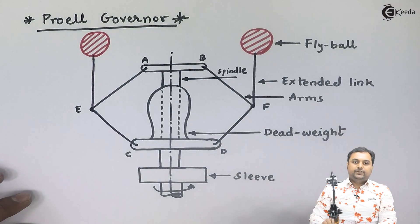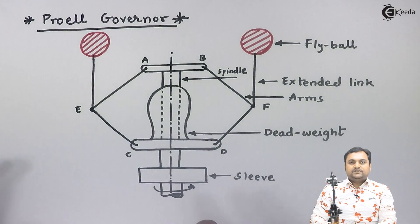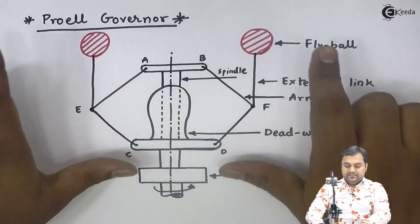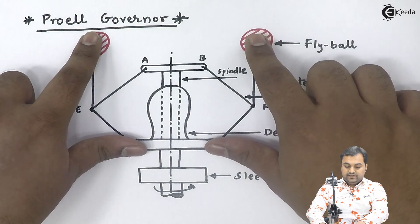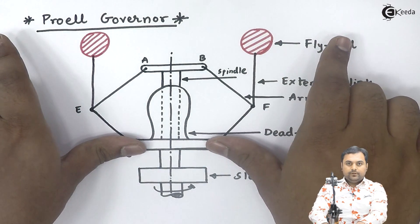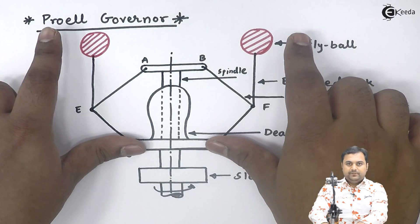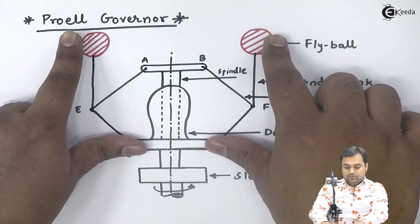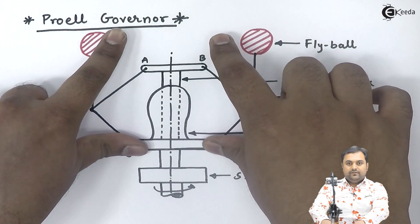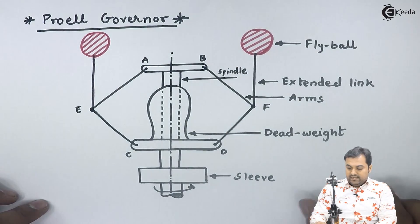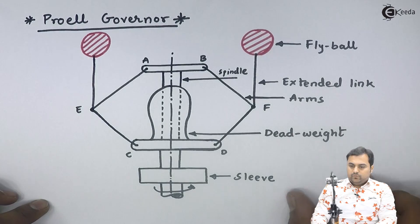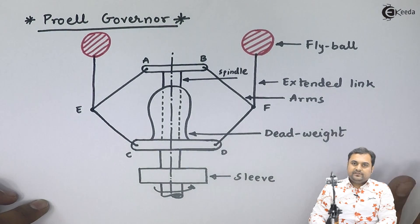When the speed decreases, the centrifugal force becomes less and the fly balls move inside. When they move inside, the sleeve is pushed down and the passage for supplying the working fluid gets increased.